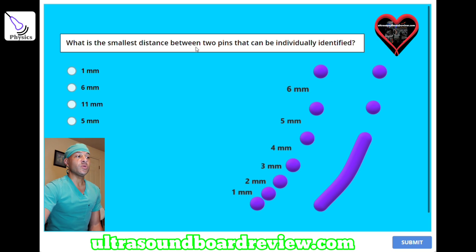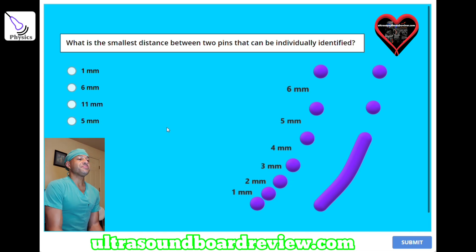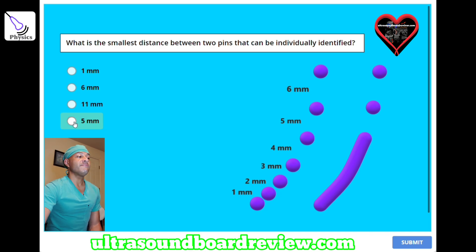What is the smallest distance between two pins that can be individually identified? A, 1mm; B, 6mm; C, 11mm; D, 5mm. The answer is D, 5mm.